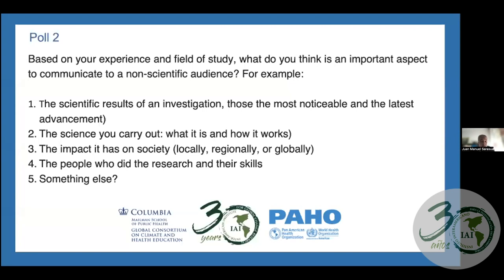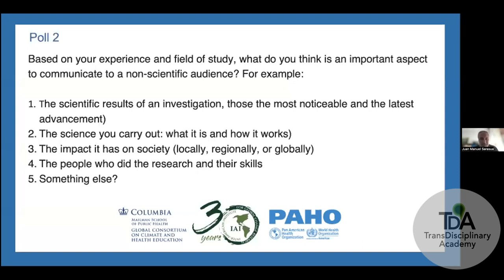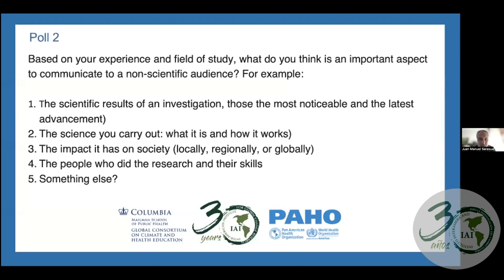Most people believe that what needs to be communicated is the impact on society, both locally, regionally, and globally. That's very interesting because we are crumbling down the crystal tower that supposedly scientists were in from the beginning of science hundreds of years ago, where science was an elite concept. It's important that scientists know we are part of society and that we need to communicate it. Sometimes it's not easy to find that impact, but that can be done over time with experience.